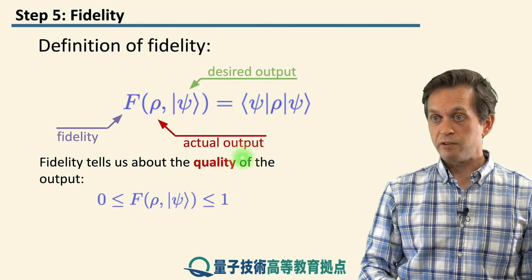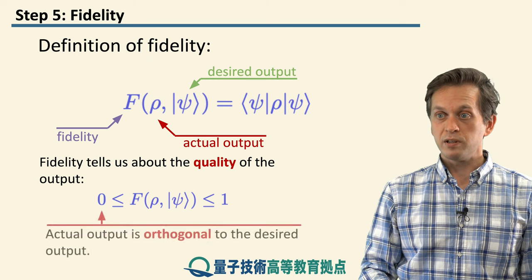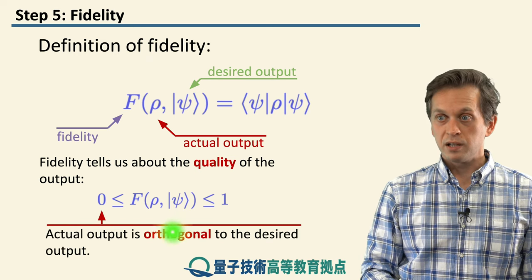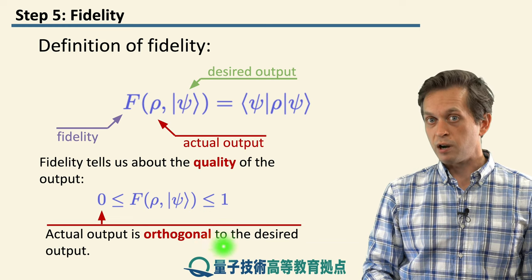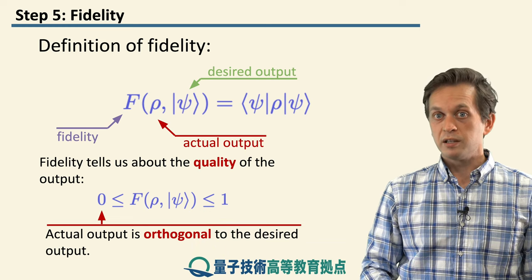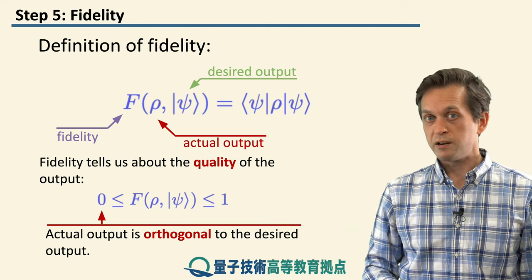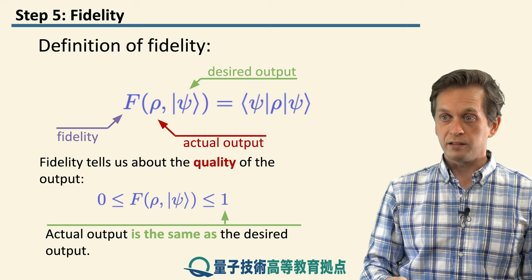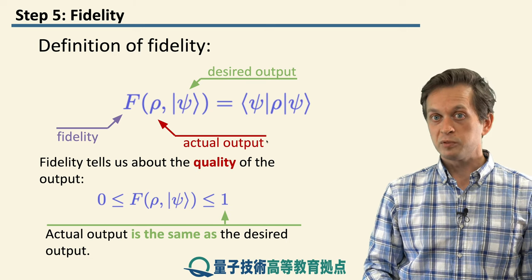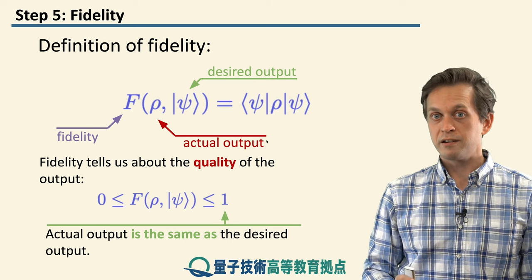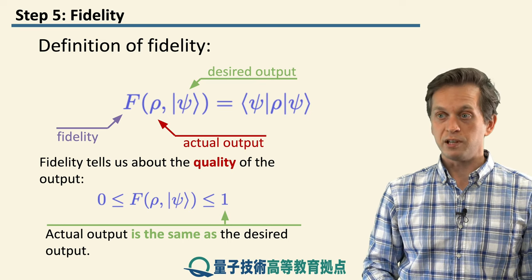Why? Because it varies between 0 and 1. So when the value of fidelity is 0, then our output state is orthogonal to our input state, or our desired output state. This means that we can actually distinguish the actual output perfectly from the desired output. On the other hand, if fidelity is 1, this corresponds to the state at the output being the desired output state, or in many cases the actual pure input state.